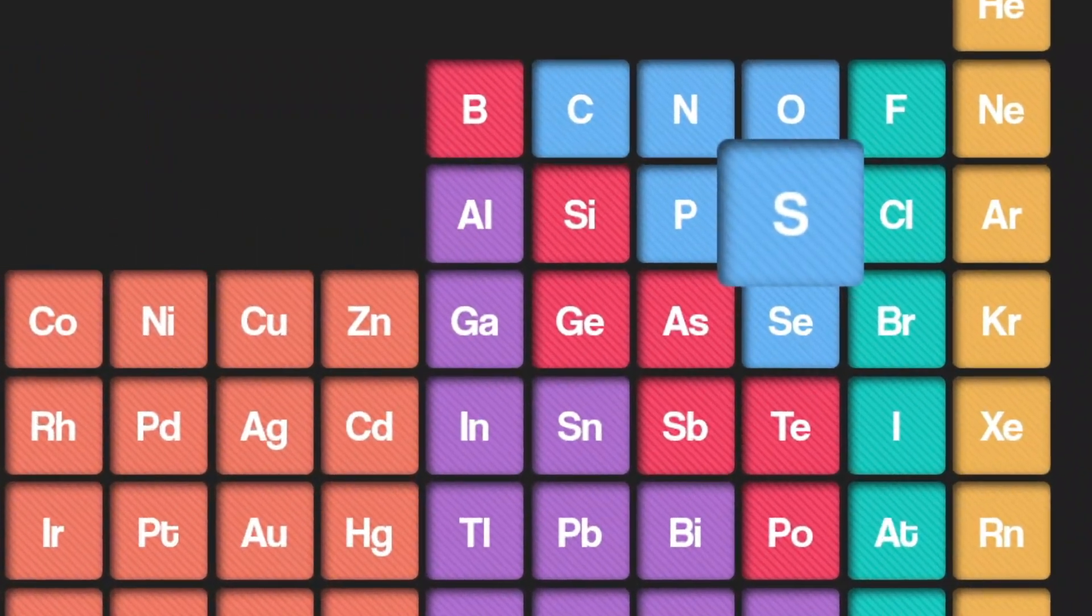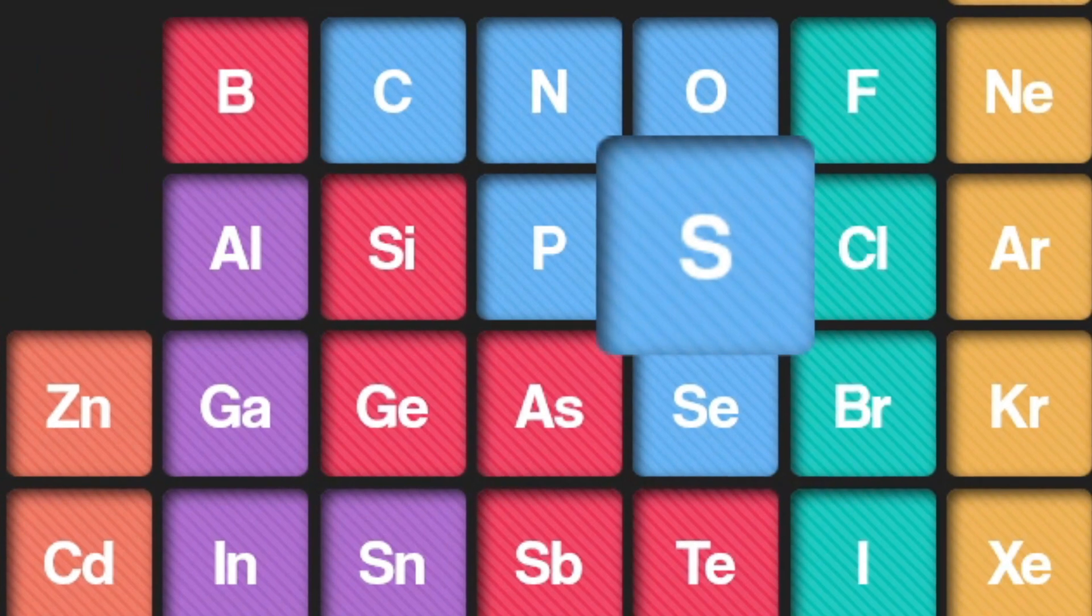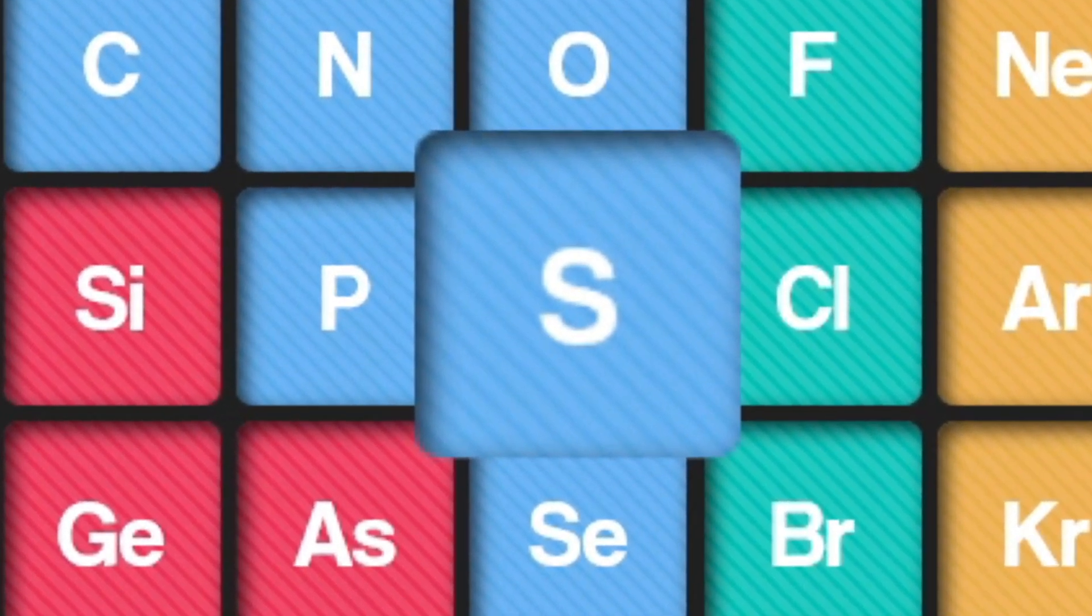Sulfur is an element with atomic number 16 on the periodic table. Let's see what it means.